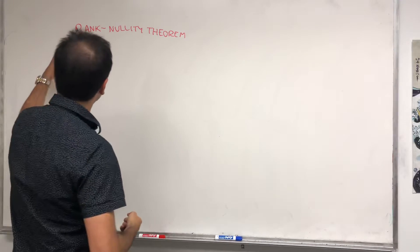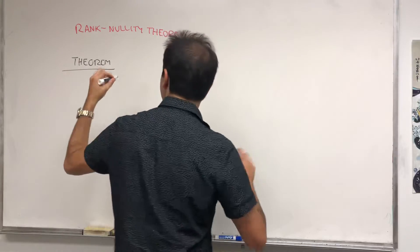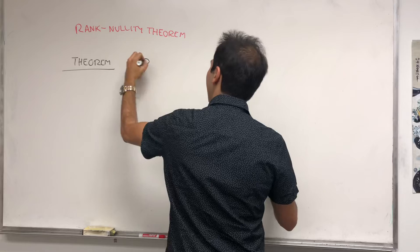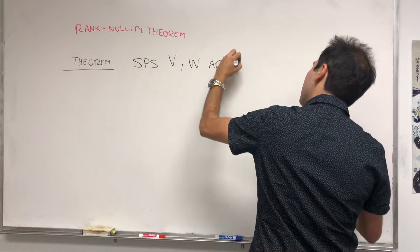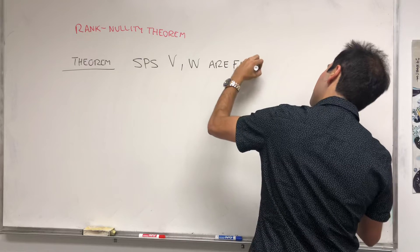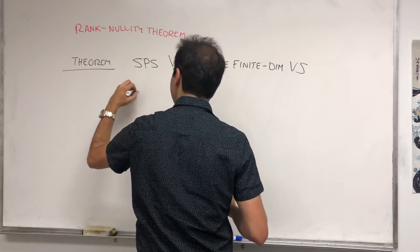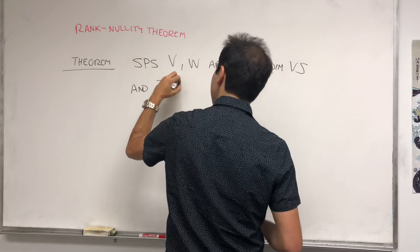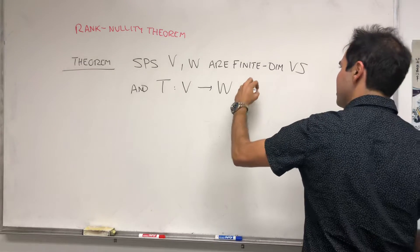What does the Rank-Nullity Theorem say? Theorem: Suppose V and W are finite dimensional vector spaces, and T is a linear transformation from V to W, so it's linear.